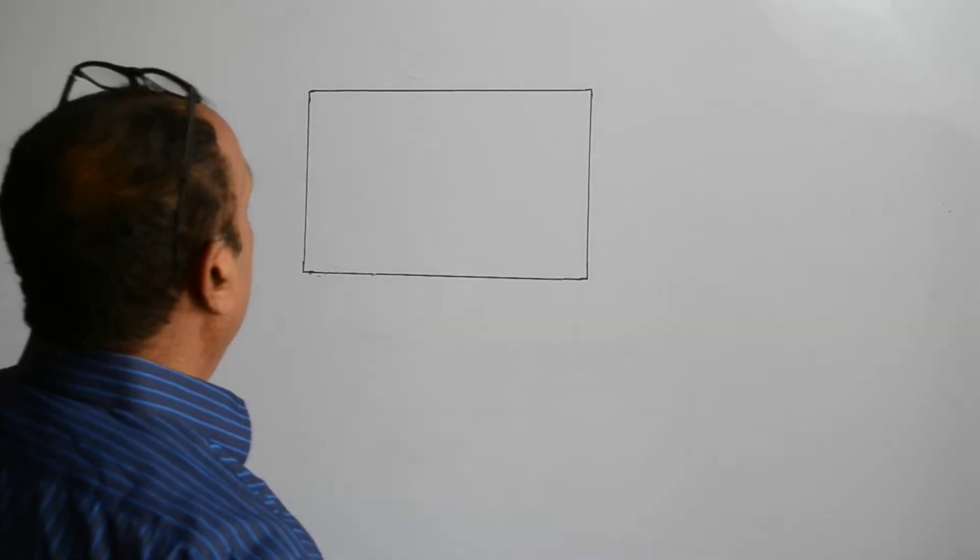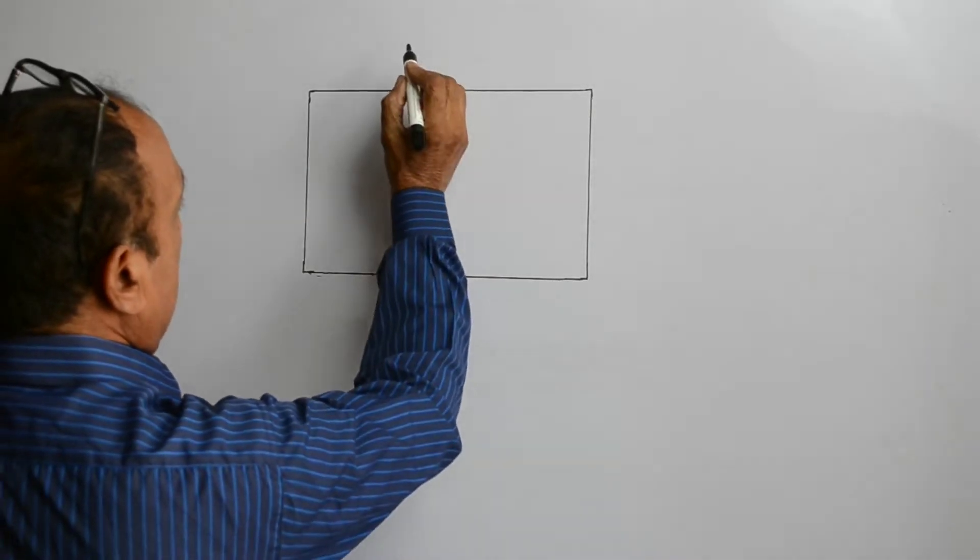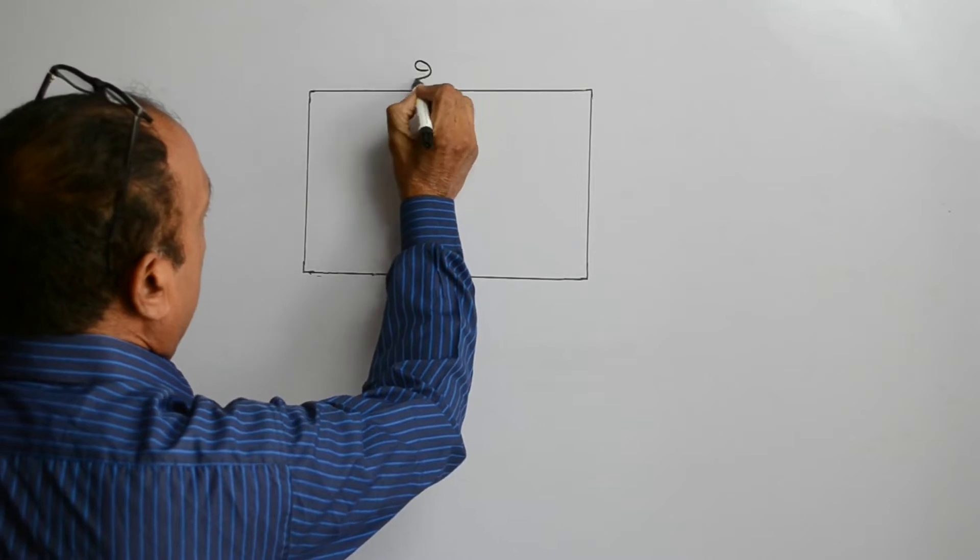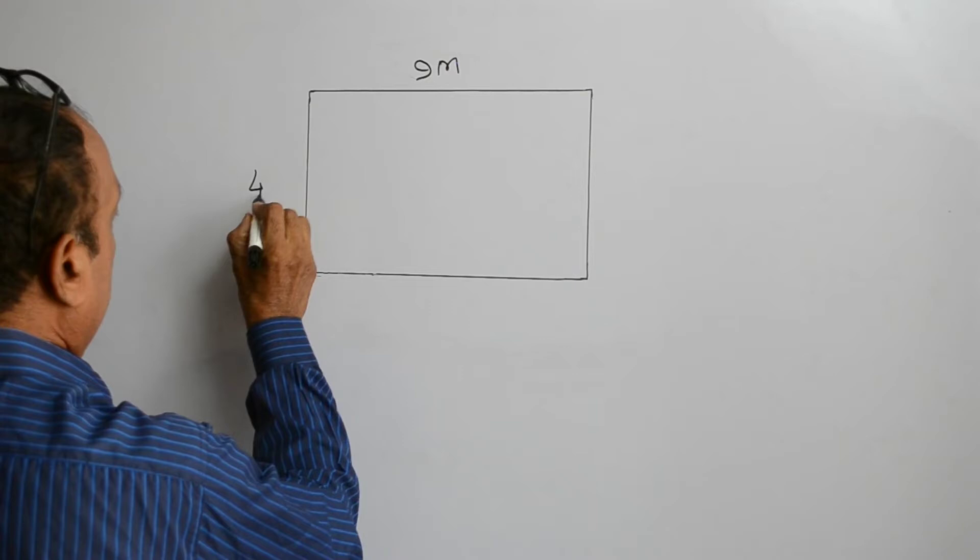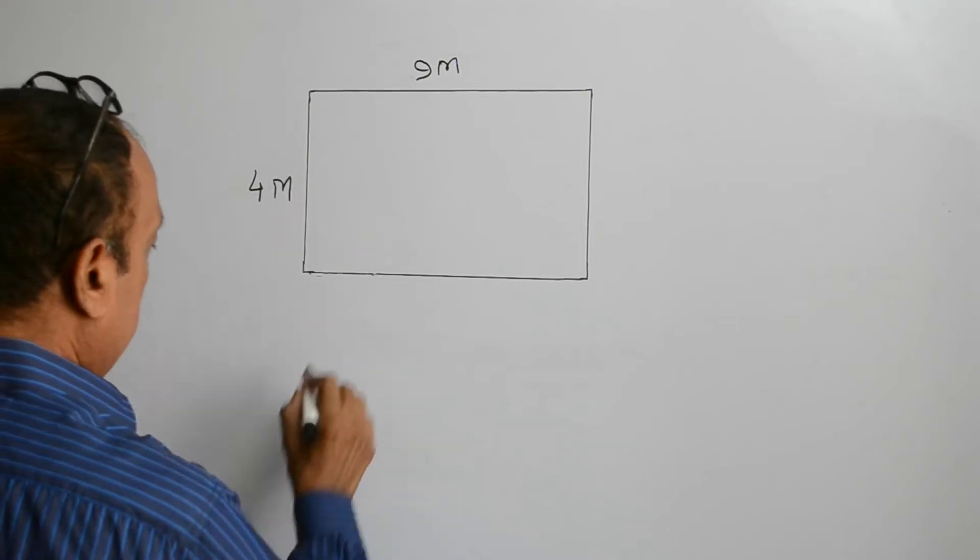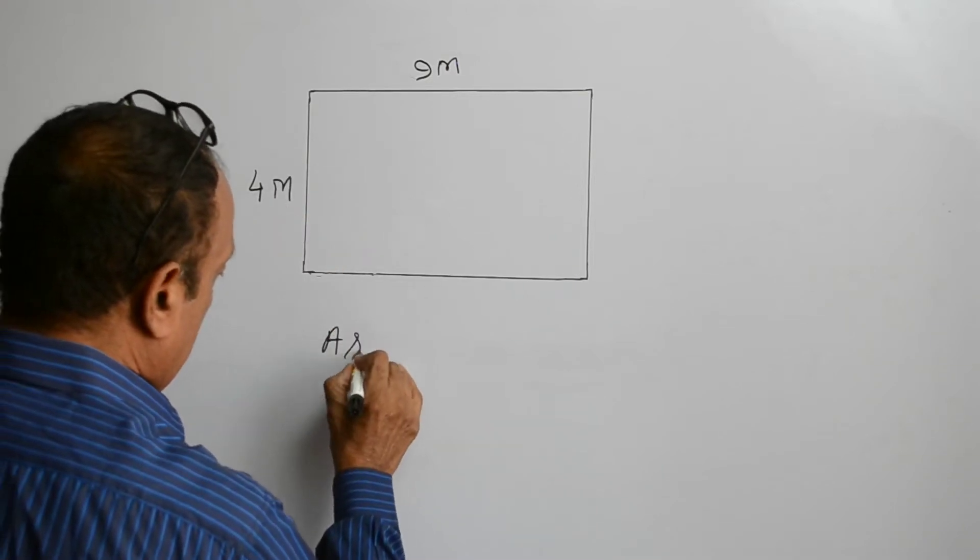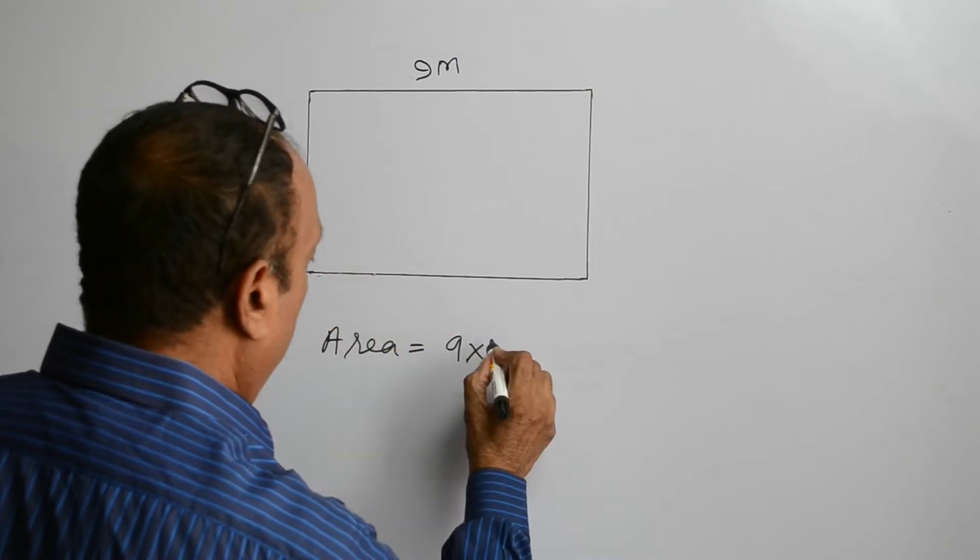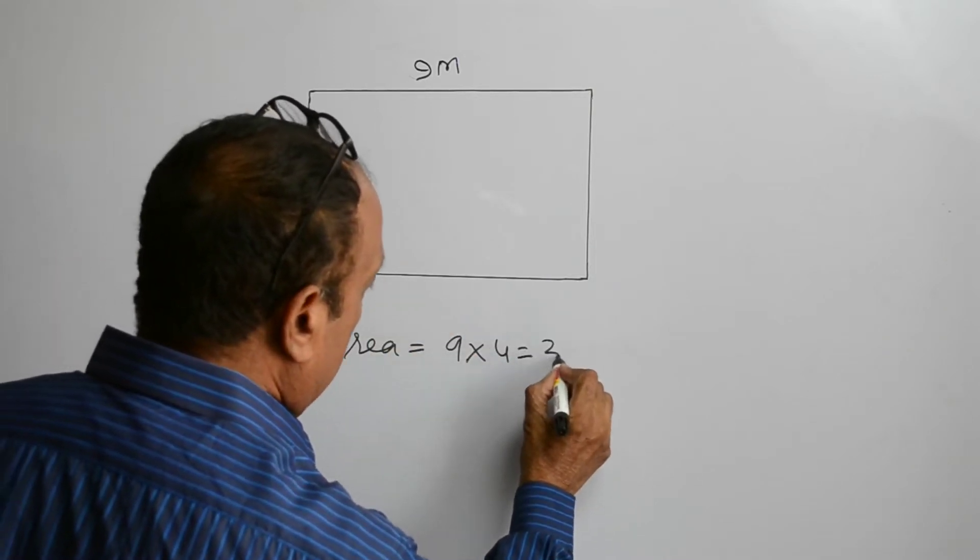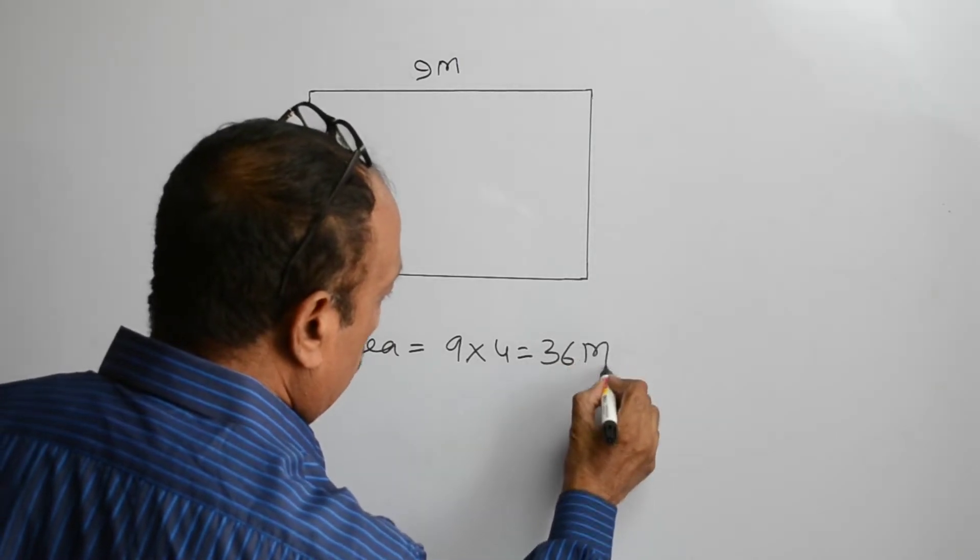In this rectangle, suppose the length is 9 meters and its breadth is 4 meters, then area will be equal to 9 multiplied by 4, which equals 36 meters square.